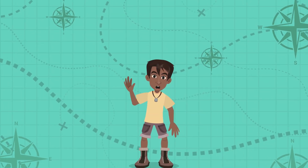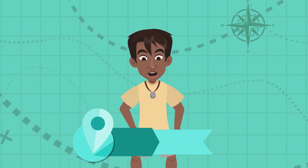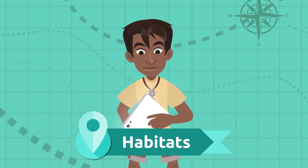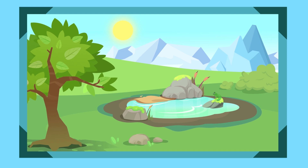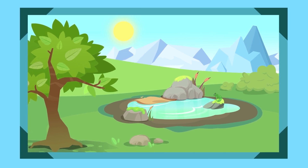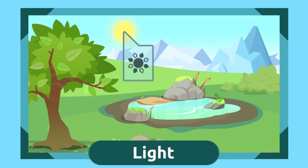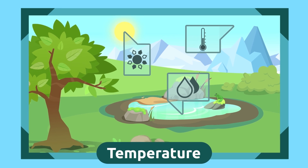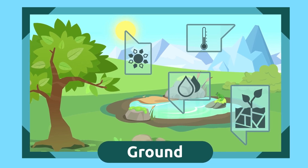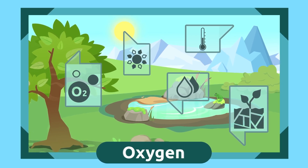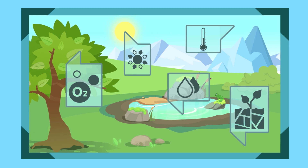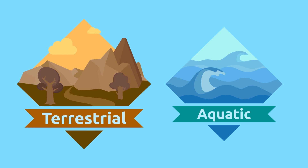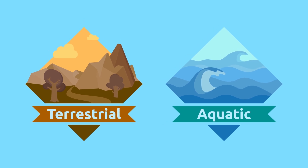Hello again friends! In the previous video we talked about habitats — do you remember what they are? We call a habitat a place that has the necessary resources so that living beings can survive. These resources are the light, the water, the temperature, the ground, and the oxygen. Depending on what these resources are, we can find very different habitats. There are two types of natural habitats: terrestrial and aquatic. In the previous video we traveled over terrestrial habitats; today we will be visiting aquatic habitats.